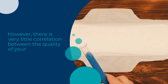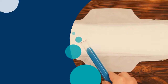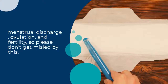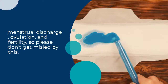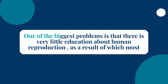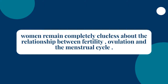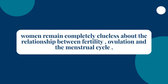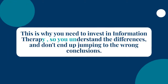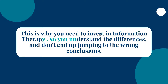However, there is very little correlation between the quality of your menstrual discharge, ovulation, and fertility, so please don't get misled by this. One of the biggest problems is that there is very little education about human reproduction, as a result of which most women remain completely clueless about the relationship between fertility, ovulation, and the menstrual cycle. This is why you need to invest in information therapy, so you understand the differences and don't end up jumping to the wrong conclusions.